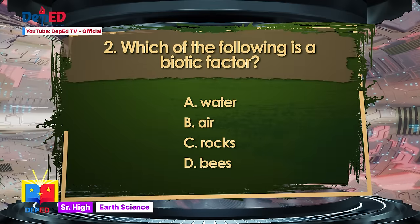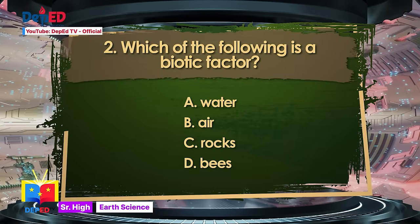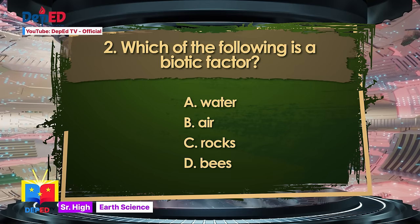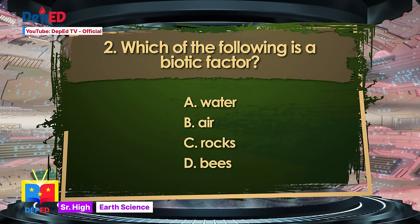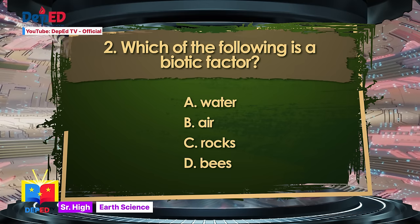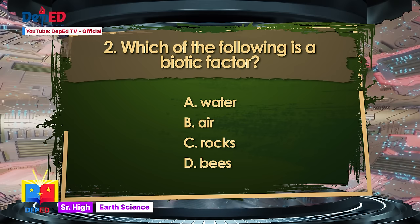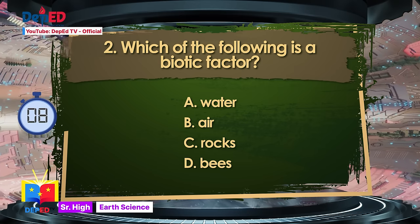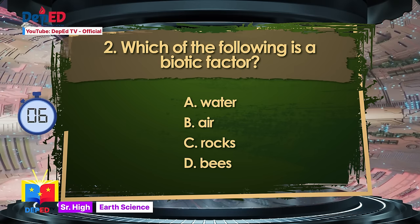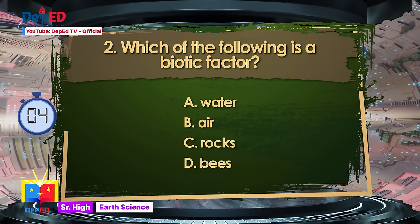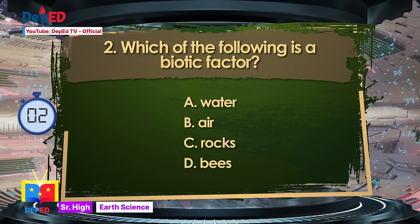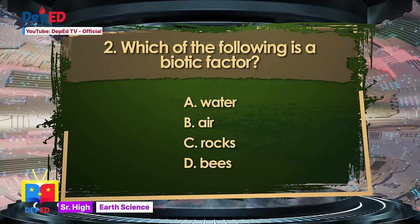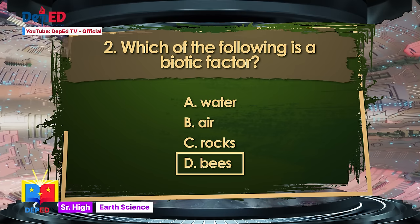Number 2. Which of the following is a biotic factor? A. Water. B. Air. C. Rocks. D. Bees. The answer is D — Bees.